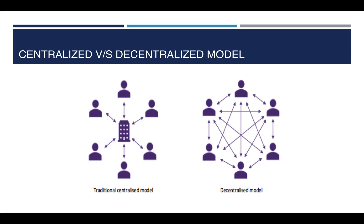Before jumping into what blockchain is, let us understand what is the difference between a centralized model and a decentralized model. In case of a centralized system, which you can see on the left side, there is one central authority or one central organization who is holding the data. One organization is responsible for maintaining the data in the system. If you want to be part of that system, you should trust that central authority with the data that you are providing.